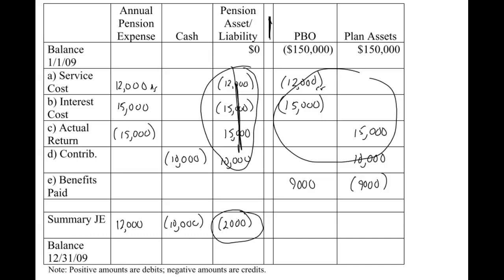For ending balances: pension expense gets closed out so we don't track it; cash has many other transactions so we skip it. The pension asset or liability was zero at the start and is now negative $2,000. The PBO ending balance is $168,000 credit, and plan assets end at $166,000. The nice thing about worksheets is this built-in check: the difference between PBO and plan assets must equal your pension asset or liability. Here we have an obligation of $168,000 and only $166,000 invested, so we're underfunded by $2,000 — a pension liability of $2,000.